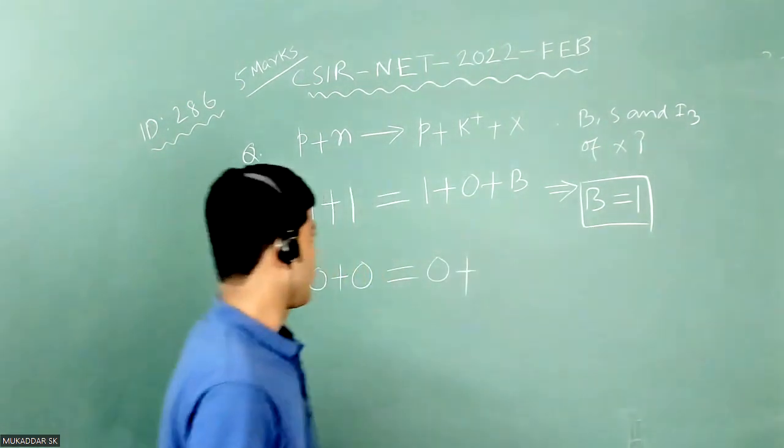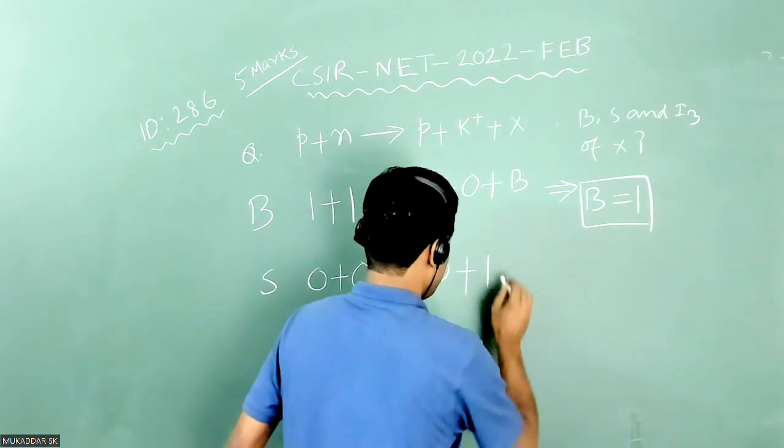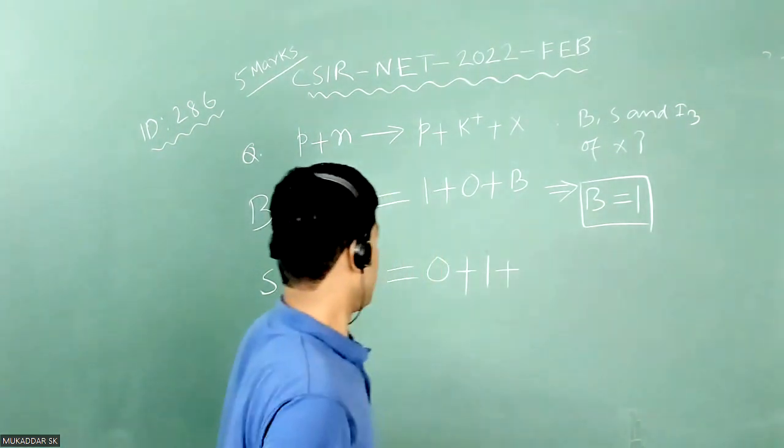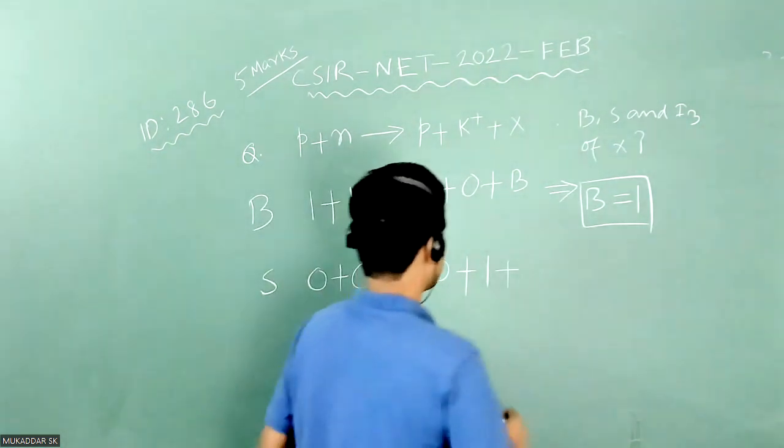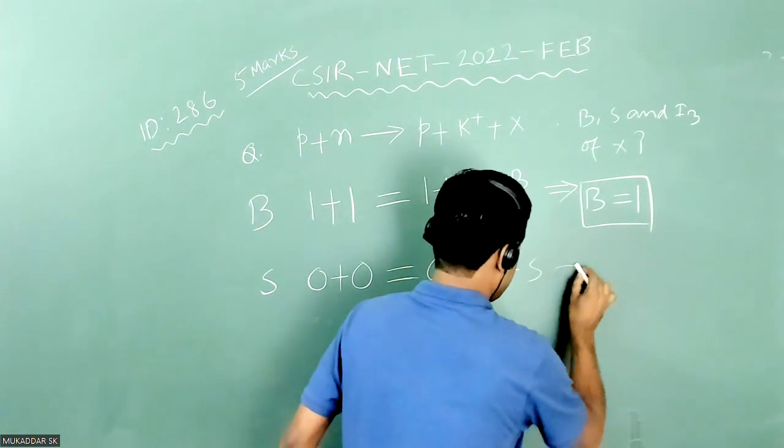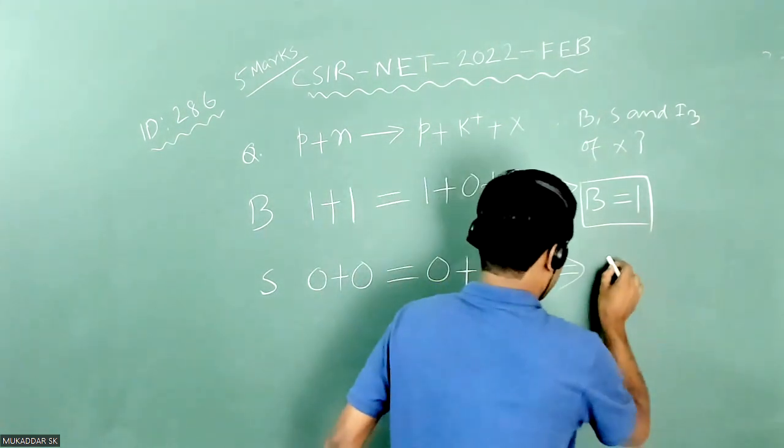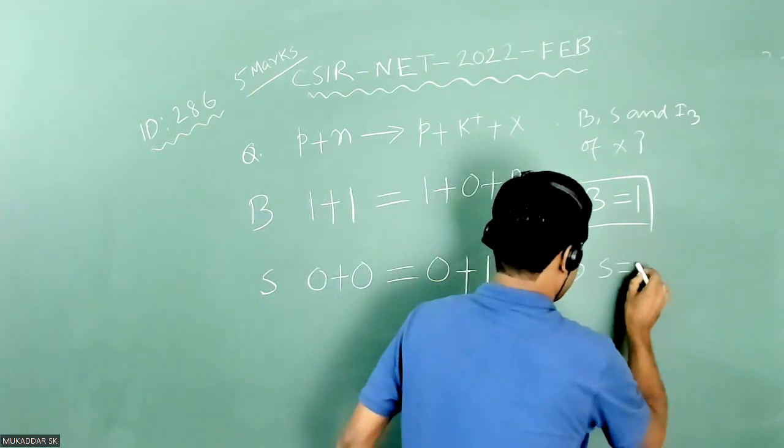K on is strange particle, and s quantum number is one. And let us apply or assume s quantum number for x particle is s. So this equation will provide s quantum number of s particle is minus one.